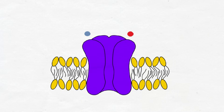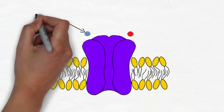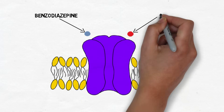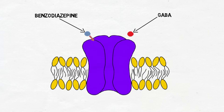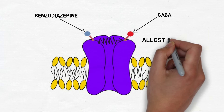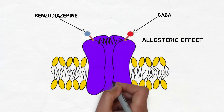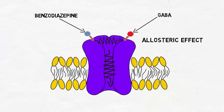When benzodiazepines bind, or attach, to the GABA receptor, they bind at a location separate from where GABA itself binds, and exert an influence over GABA binding. This type of action is called an allosteric effect. In the case of benzodiazepines, it results in increased action at the GABA receptor.